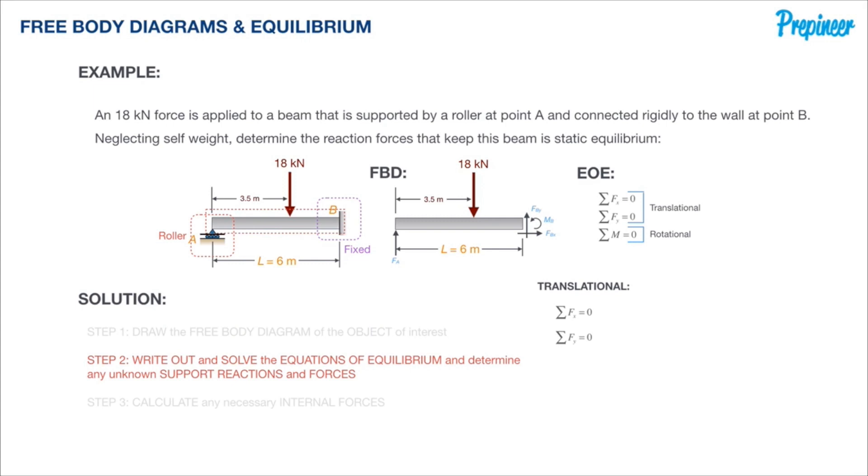Let's start with our translational equations of equilibrium, particularly component x. Gathering all of our x components, we get an equation of F sub Bx. Since there's only one component, it has to sum to zero, so F sub Bx equals zero.